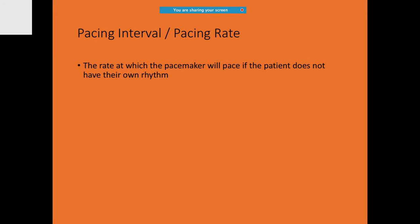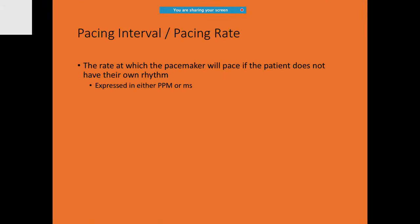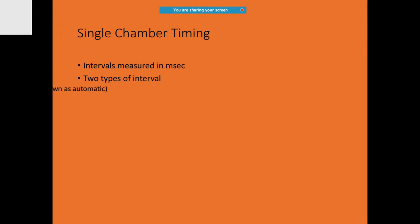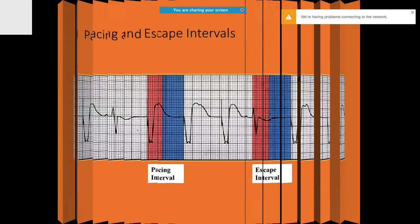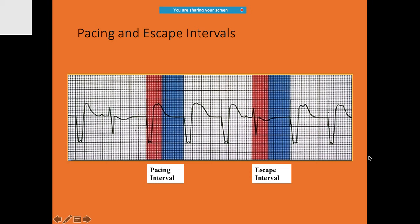Mode selection also depends on the status of AV conduction — normal, slow, or blocked — and whether there is chronotropic incompetence. Then comes the pacing rate or interval — the rate at which the pacemaker paces if the patient does not have their own rhythm, expressed in PPM or milliseconds. For single-chamber pacing there are two types of intervals: the pacing interval, which is automatic, and the escape interval. These intervals can be further broken down into absolute and relative refractory periods.